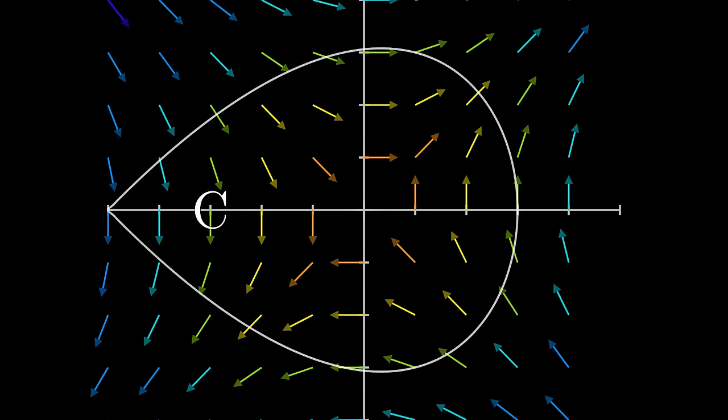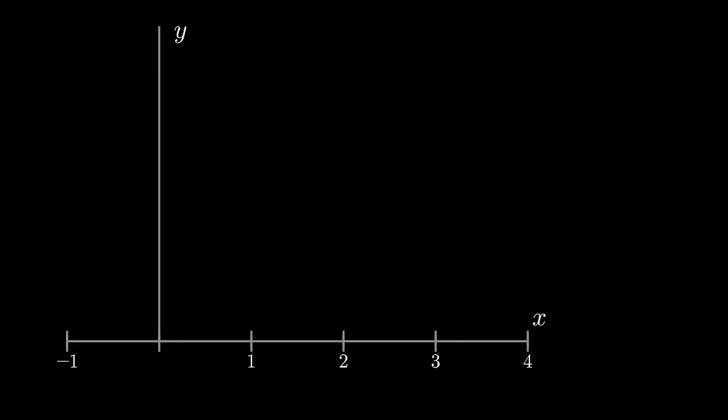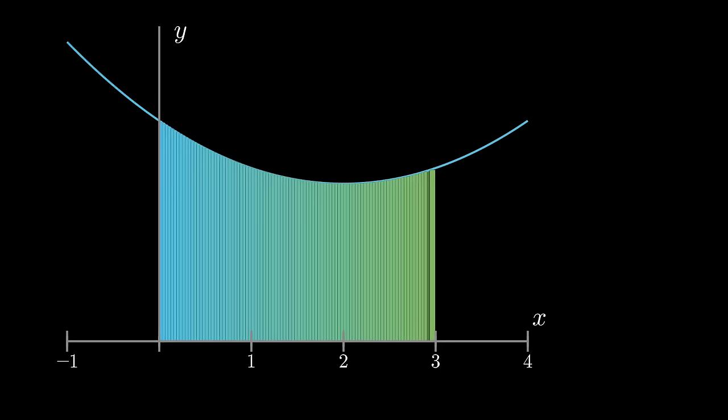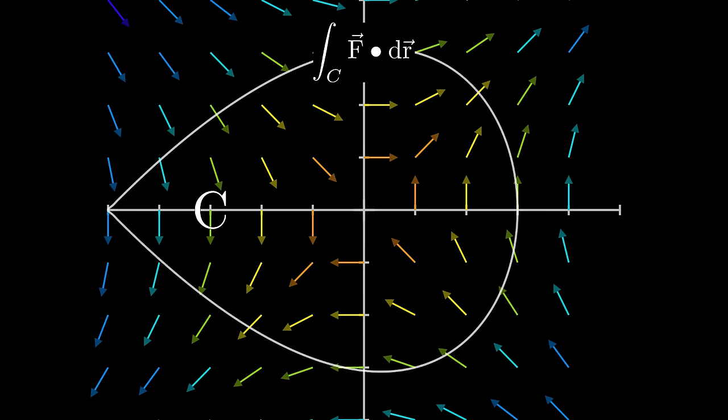Let's go over that again. In calculus, we always use this idea of using infinite approximations. For example, we did this when learning about the definite integral. Using Riemann sums, the area under a curve was approximated, and the integral was the sum of these areas as we approached infinite number of rectangles.